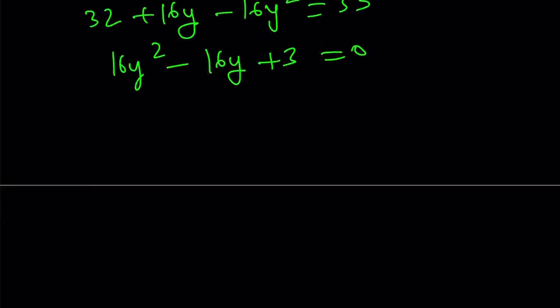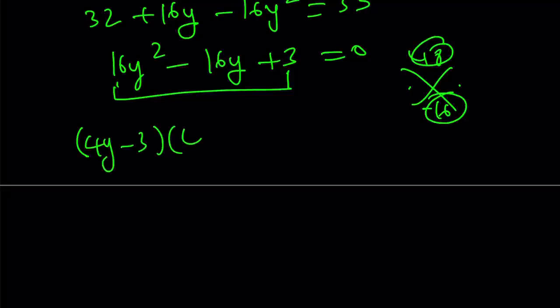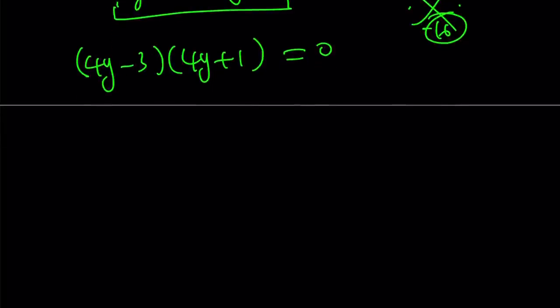And this is factorable. Isn't that cool? You know there's an x method. You can multiply this, 48. And then you put that here. You put the negative 16 here. Find two numbers whose product is this and that, so on and so forth. To keep a long story short, this can be factored as 4y minus 3 and 4y minus 1. And this gives us really cool results.